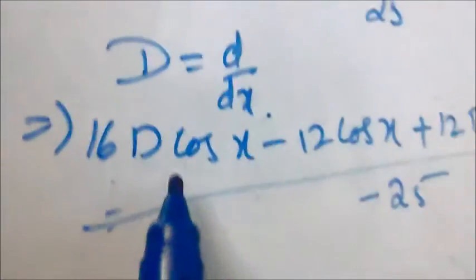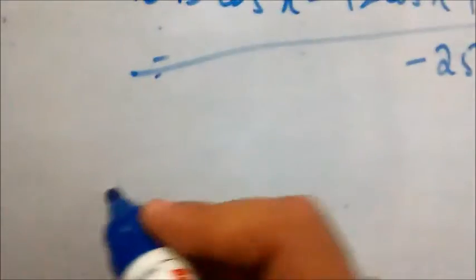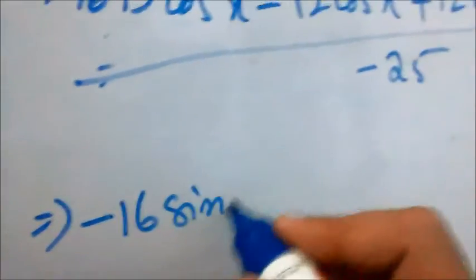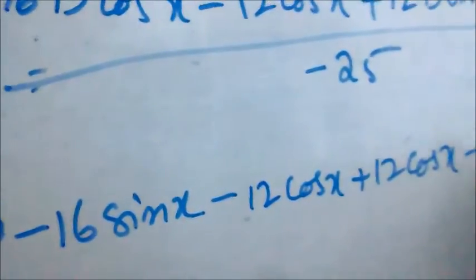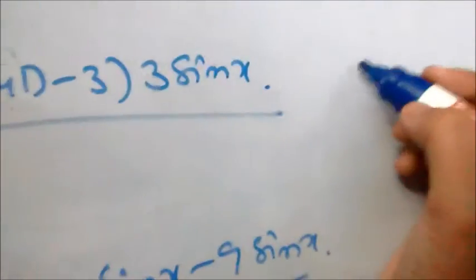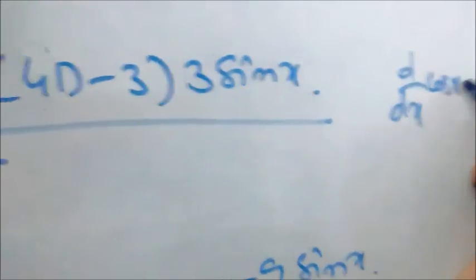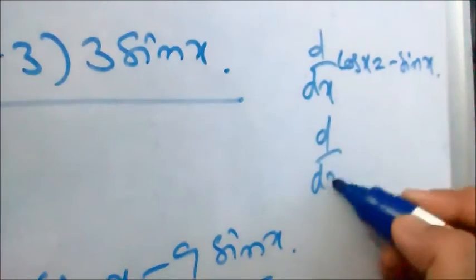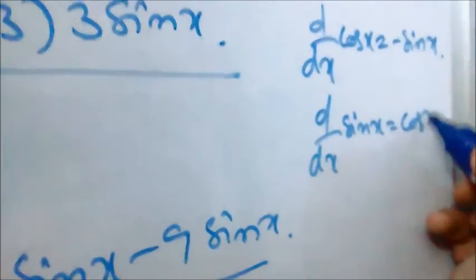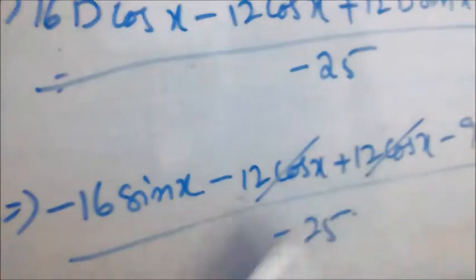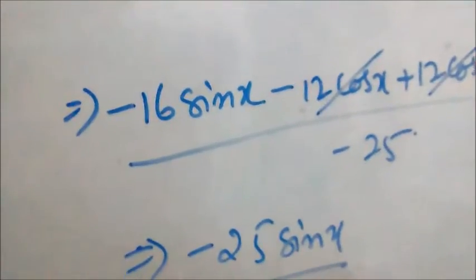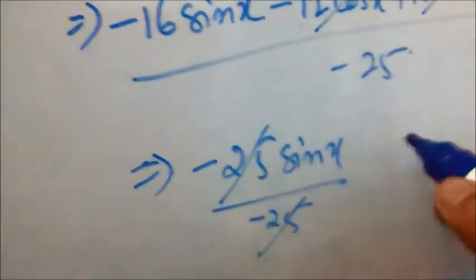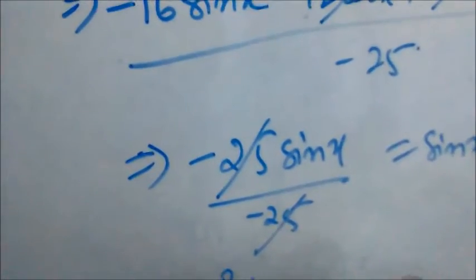The differentiation of cos(x) is -sin(x) and differentiation of sin(x) is cos(x). So we get: -16sin(x) - 12cos(x) + 12cos(x) - 9sin(x), all divided by -25. The -12cos(x) and +12cos(x) cancel, leaving -25sin(x) / -25. The 25s cancel, giving sin(x). So PI = sin(x).